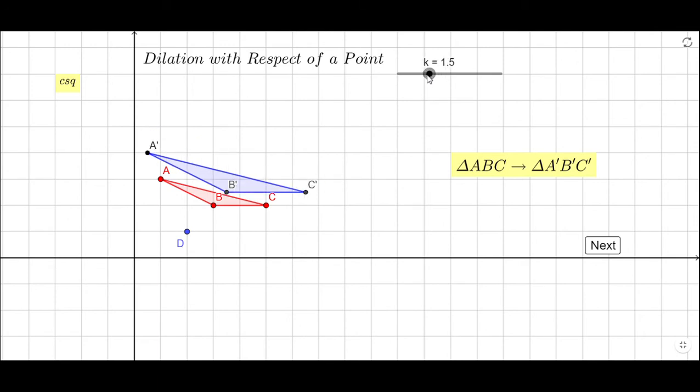When the scale factor is one, the two triangles overlap. When I get less than one, I have what is called a reduction. When I get more than one, I have what is called an enlargement, and you can go to k equals five.